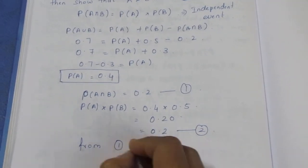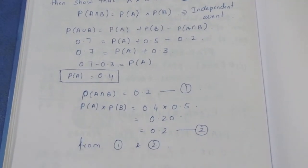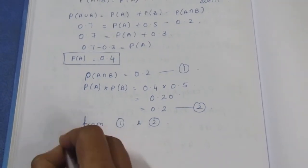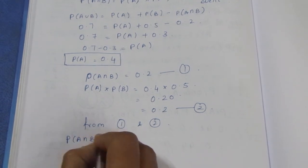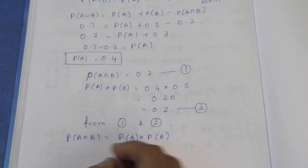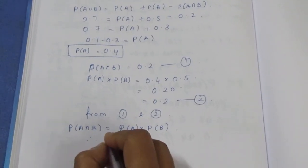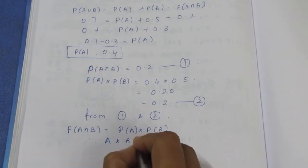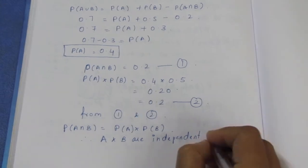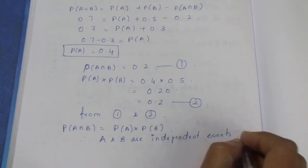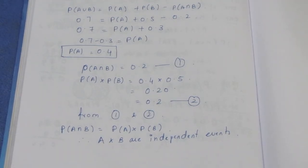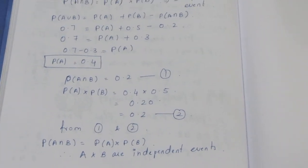From equations 1 and 2, P(A∩B) = P(A) × P(B). Therefore, A and B are independent events. Thank you.